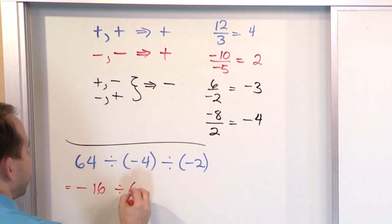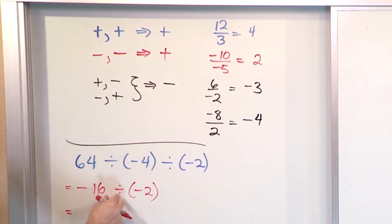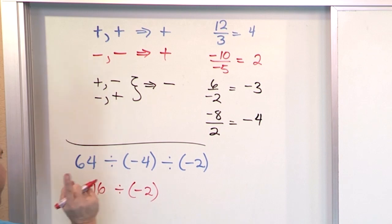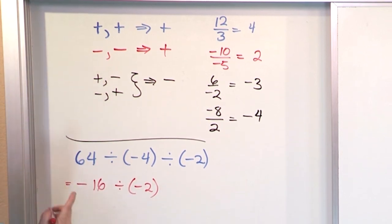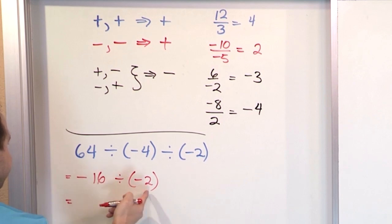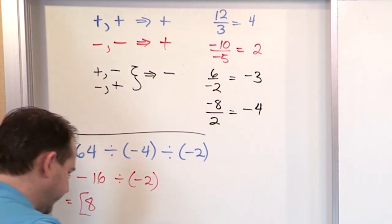But then we're still dividing by negative 2. So in the next step, we take negative 16 divided by negative 2. That's negative divided by negative, which means we always get a positive. 16 divided by 2 is 8. So you see, it's exactly the same rules — we're just doing divisions instead of multiplications.